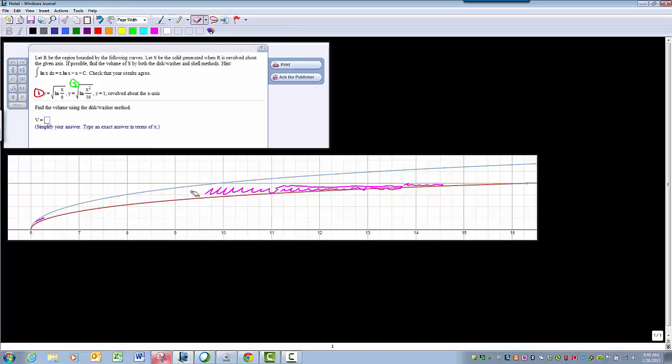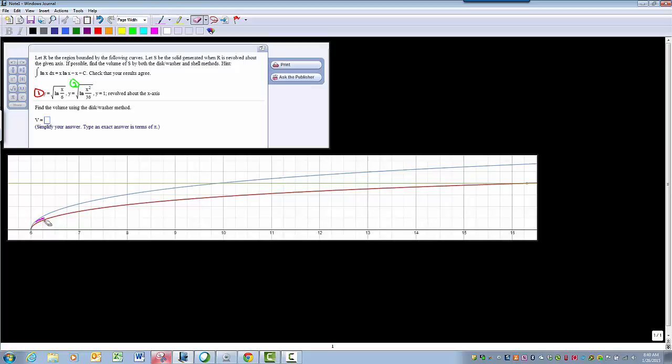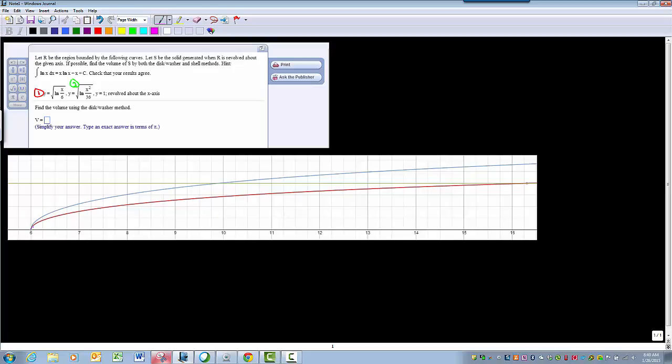Okay, so what we need to do now is we need to find some intersection points. Okay, so what we're going to do is, well first, we know that these guys intersect at an x value of 6. The next point that's going to be important is where do these two guys intersect? And the reason for that is because when I work with the washer method, okay, I'm going to need to find the radius values. Okay, right?